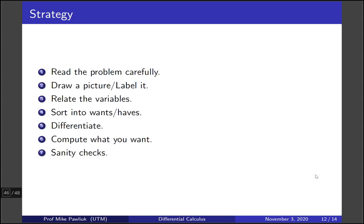To summarize the strategy, you should first read the problem carefully, then draw a picture and label it, relate the variables you have, sort into wants and haves, differentiate, compute whatever it is you want, and then answer the question and apply sanity checks.